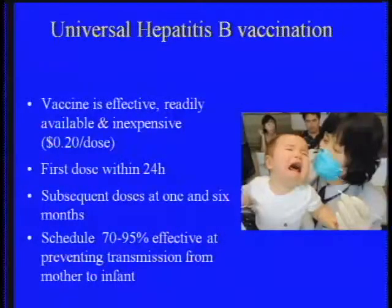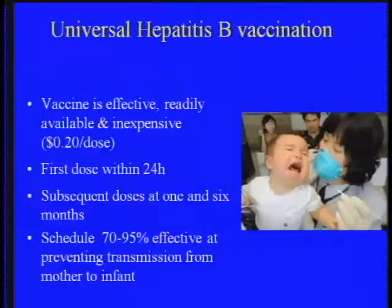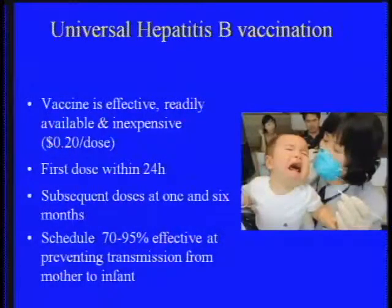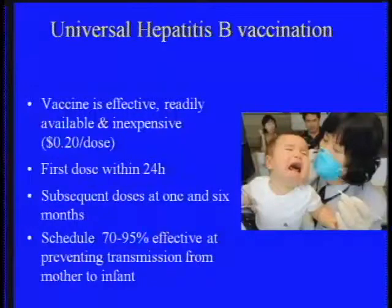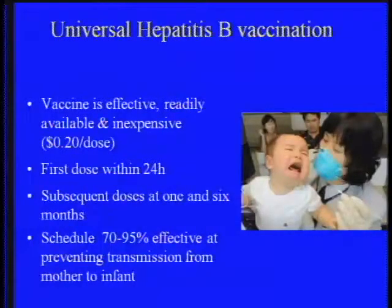In terms of universal hepatitis B vaccination, the vaccine is effective, readily available, and inexpensive at 20 cents a dose. The first dose must be given within the first 24 hours after birth to prevent vertical transmission from an infected mother to a baby. The two subsequent doses are given at one and six months. If this schedule is met, it is over 70% effective at preventing vertical transmission.